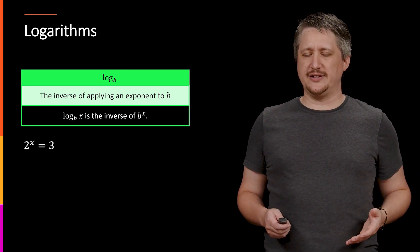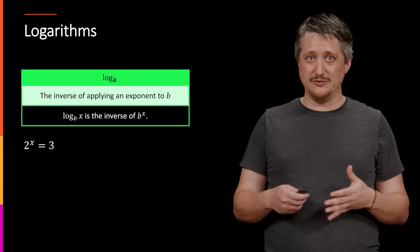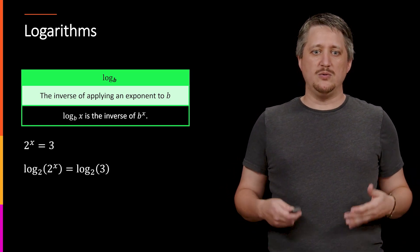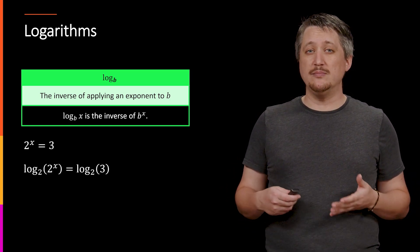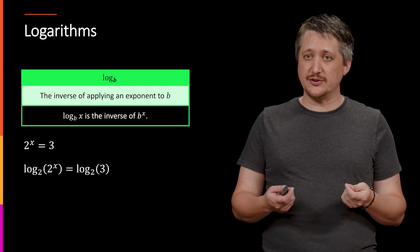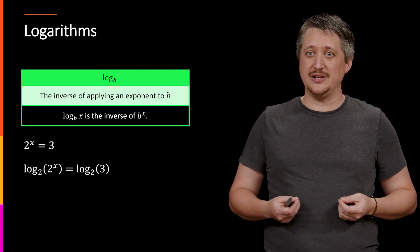So if we're looking at something like 2 to the x equals 3, and we want to solve this to some value, well, we would apply log base 2 on both sides because the whole point of the inverse is that they would unravel each other, right?